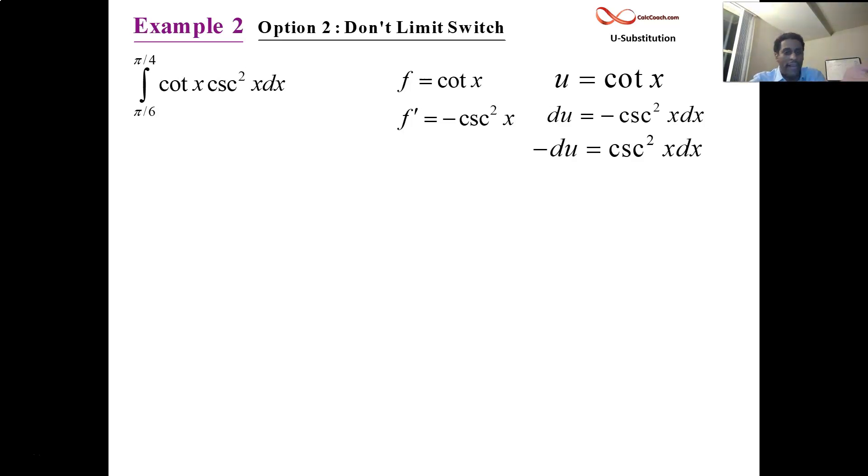We can divide by negative 1 here. Now we know about the replacement to cosecant squared x dx and we know about the replacement to cotan x. Cotan x's replacement is u. Cosecant squared x dx's replacement is negative du. That's negative 1, we can pull that out. It's a constant like that 1 third and 2 thirds where we can pull them all the way out.